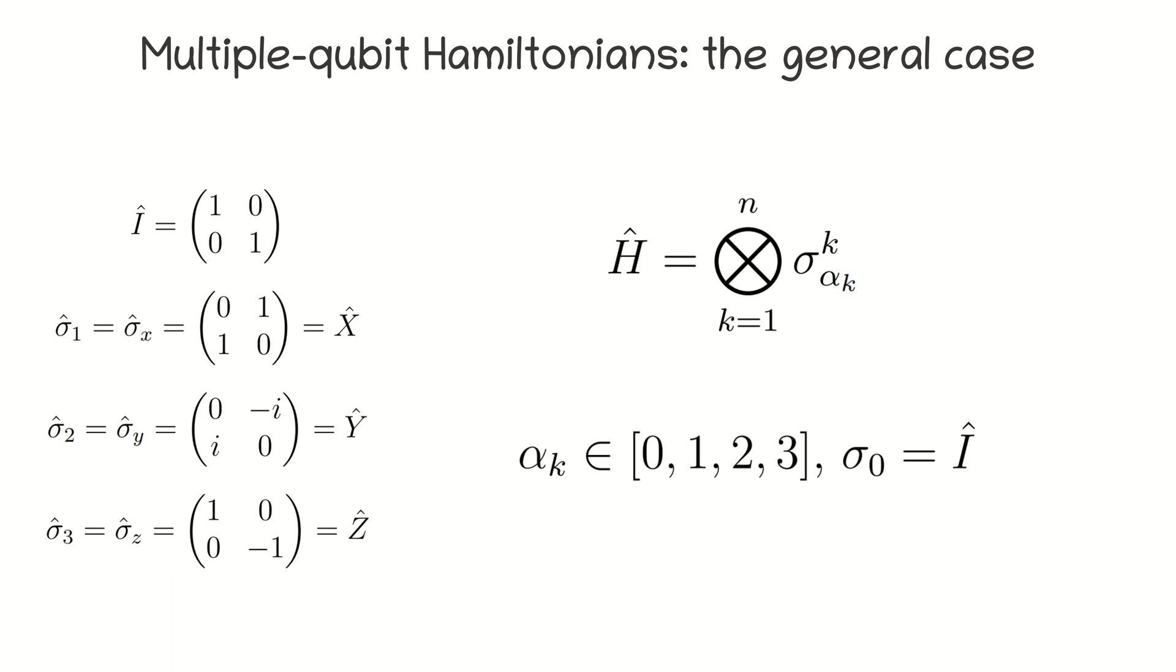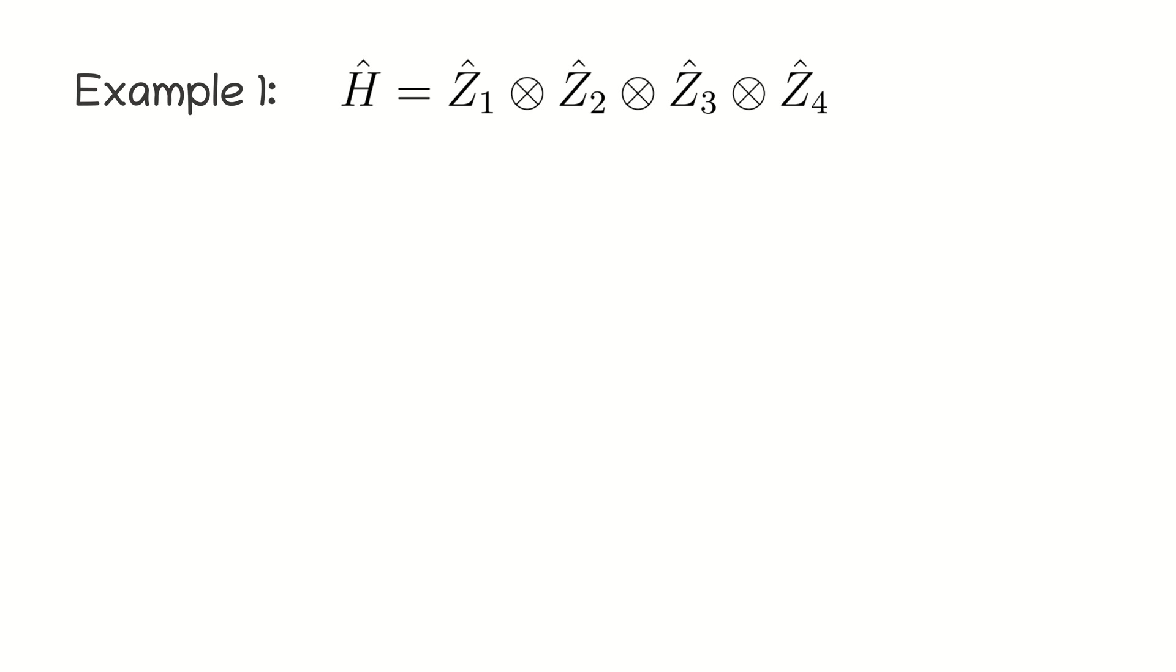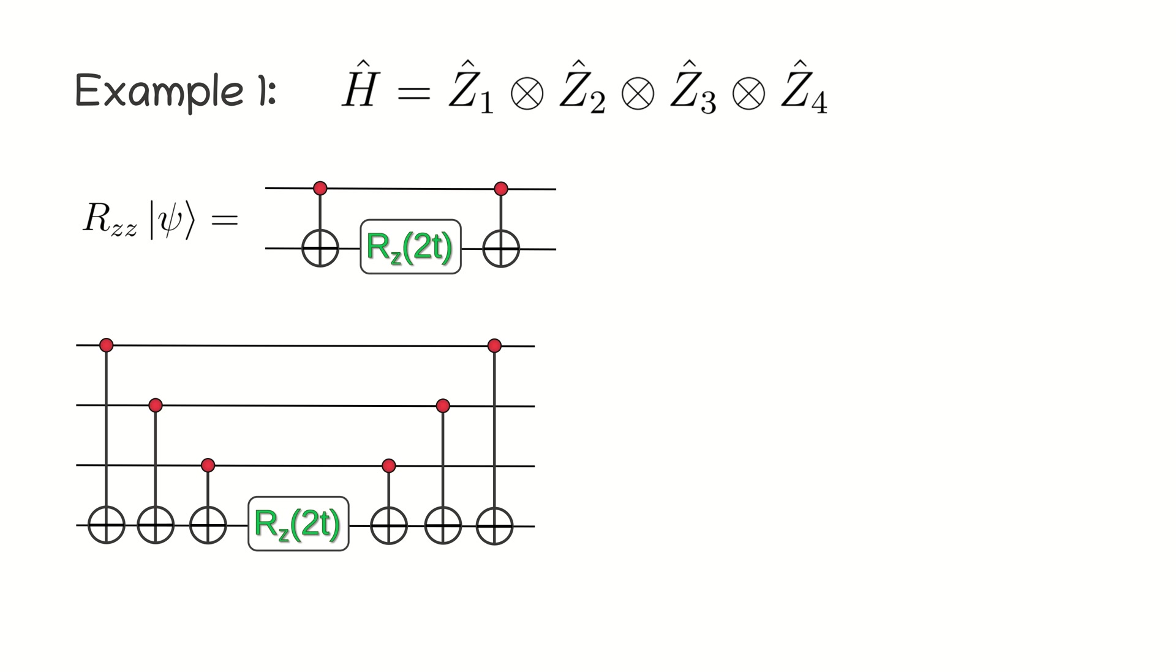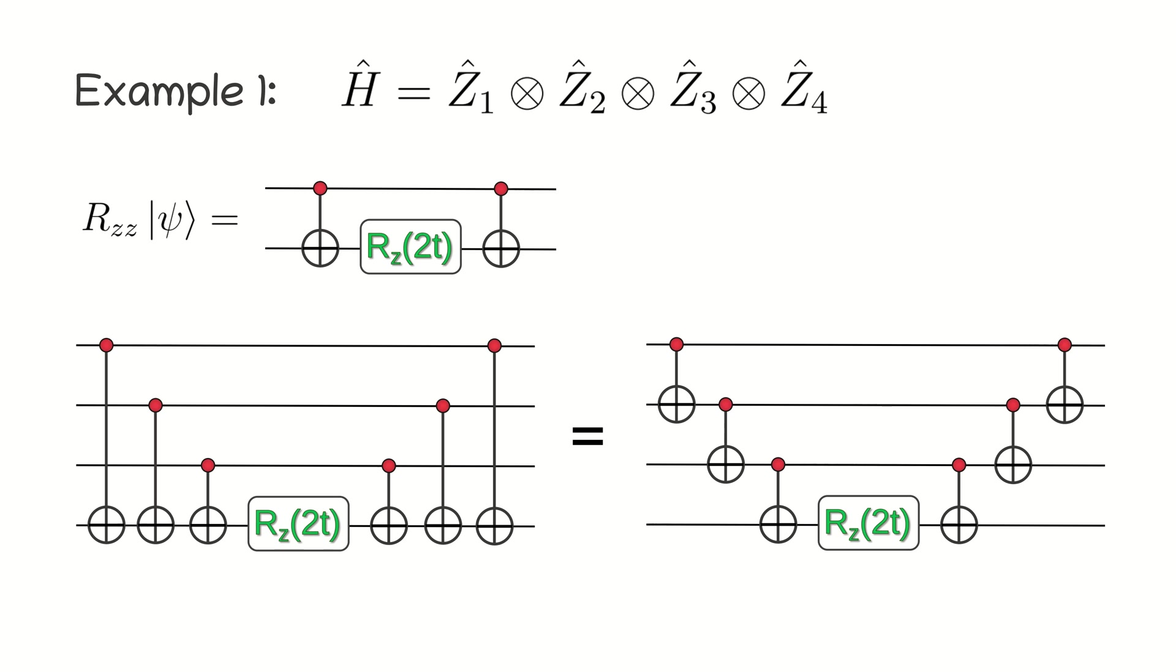Multiple qubit Hamiltonians. Extending the same procedure allows simulating exactly the Hamiltonians consisting of an arbitrary tensor product of Pauli operators. For example, applying the same logic regarding the parity and phase shift as we did for Rzz operator, we can construct the quantum circuit to simulate the Hamiltonian formed by the tensor product of four Pauli Z operators. It can be shown that this quantum circuit is equivalent to the one with the ladder of CNOT gates.